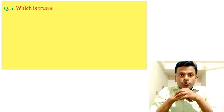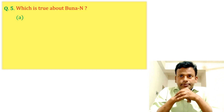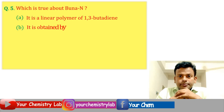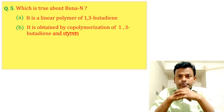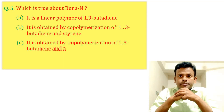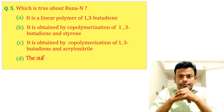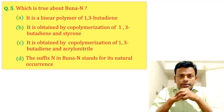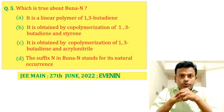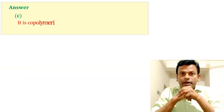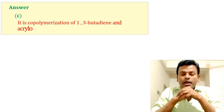Question 5: Which is true about Buna N? Options A, B, C, and D. This question was set in JEE Main 27th June 2022 evening shift. Answer: Option C is correct. Buna N is a co-polymerization product of 1,3-butadiene and acrylonitrile. So Option C is correct.